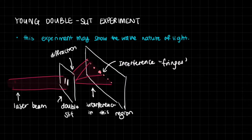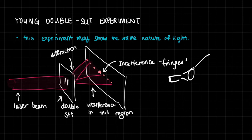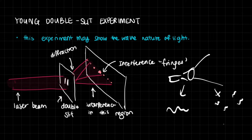The Young's Double Slit experiment. This is an experiment that was obviously used on light. Back when this experiment first came up, we were still trying to figure out what exactly light was. We were trying to figure out if it was a wave or if it was particles — photons, little quanta. There was a huge debate going on in the field of physics about whether light was a wave or a particle.